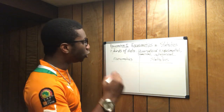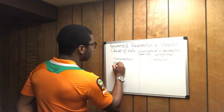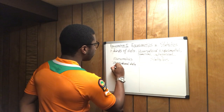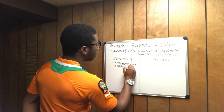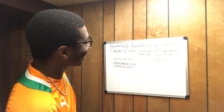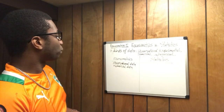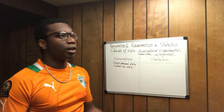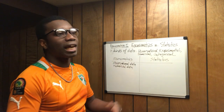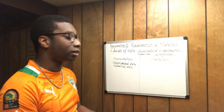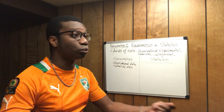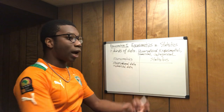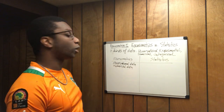In econometrics, we mainly use observational data and numerical data. Sometimes we can use categorical data, but it's not used as much. The reason we use observational data in econometrics is because you cannot run experiments in the social sciences. In economics, you cannot run experiments to see how people react to an economy. You collect data based on surveys, quantify the answers, and try to make a statistical inference.